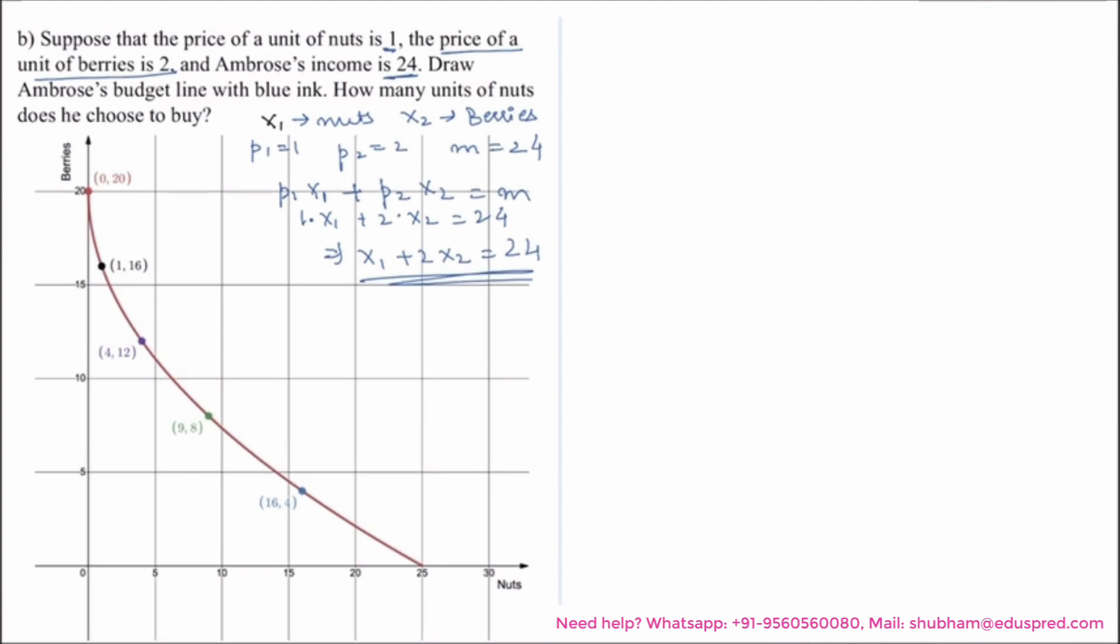By simple geometry, you can easily plot this which would look like this. So this blue line is your budget line for Ambrose.